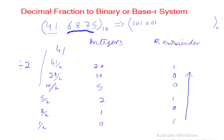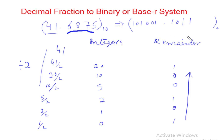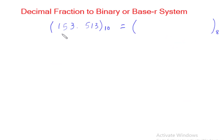After the binary point we write the fraction part we calculated earlier by multiplication, which gave us 0.1011. So combining the integer and fraction parts, the complete binary representation is 1010001.1011.